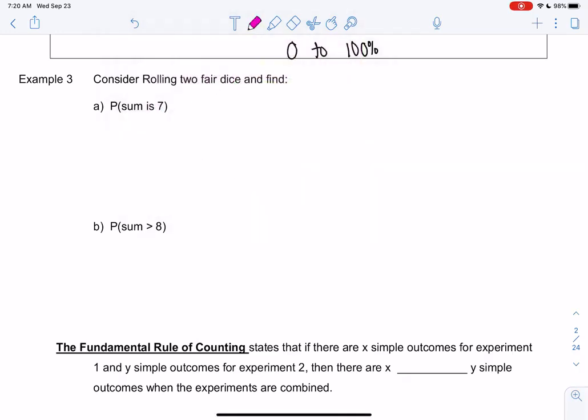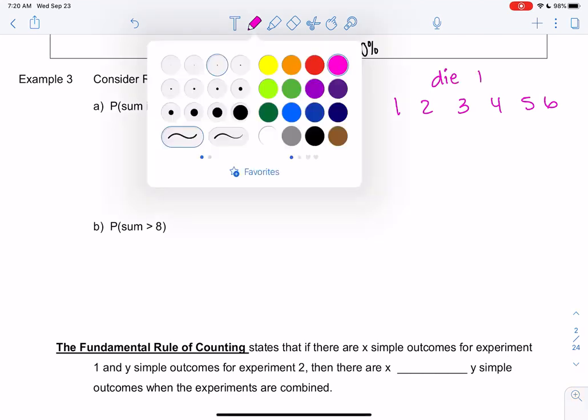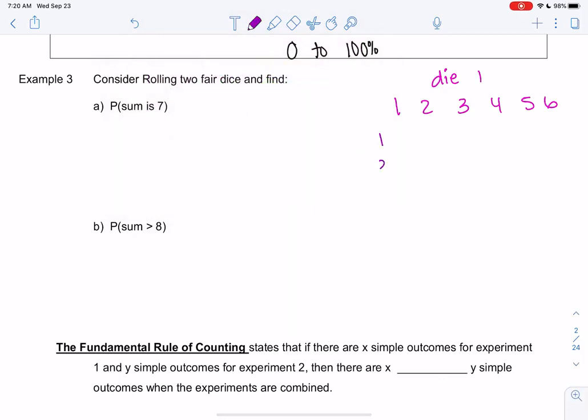So let's consider, I'm going to put the first dice on top: 1, 2, 3, 4, 5. It's die when it's singular, so die 1. And then die 2 goes on the side.